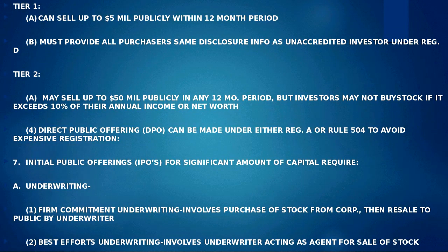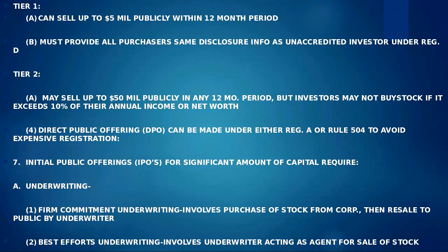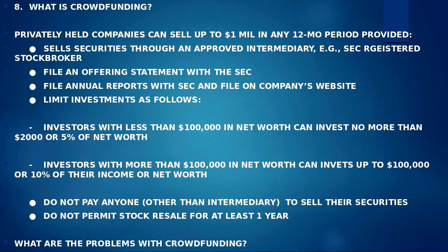A second type is called best efforts underwriting, which involves agents like stockbrokers selling the stock on behalf of the seller. They're not buying the stock — they're finding investors who want to buy certain types of securities. Goldman Sachs, for example, is an investment bank with brokers who call their clients to let them know when new offerings are coming to market.